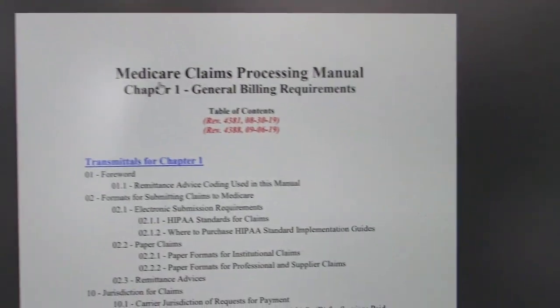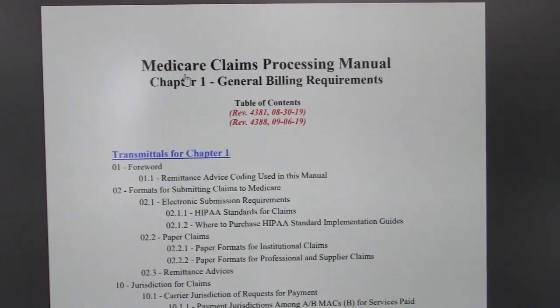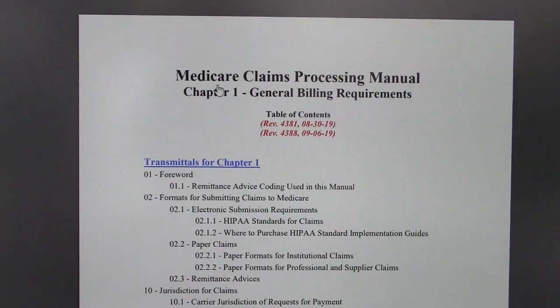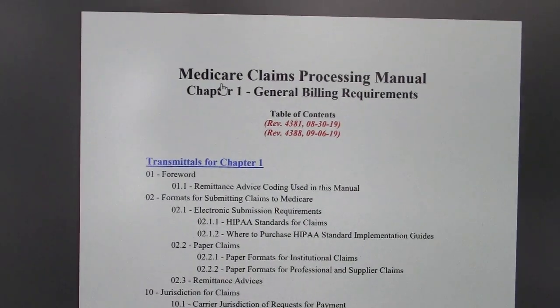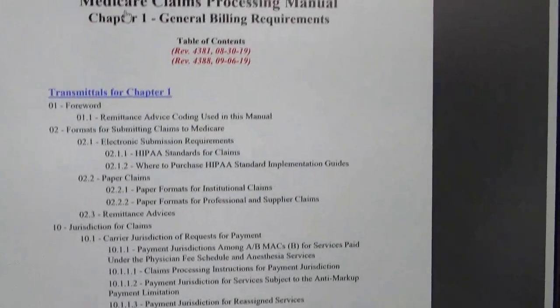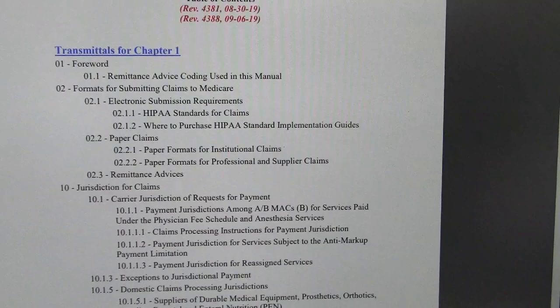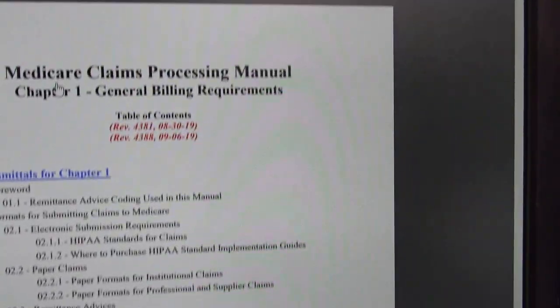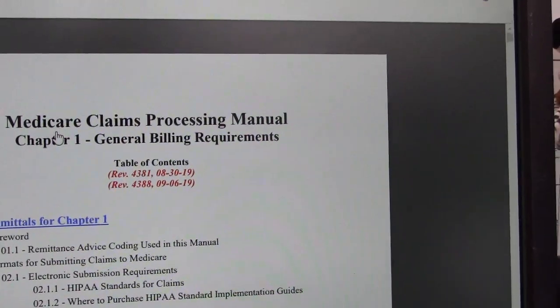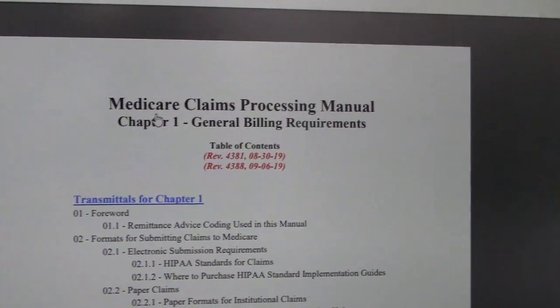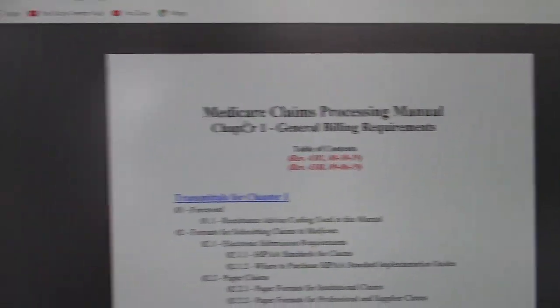These chapters can be downloaded and saved on your computer or other electronic devices as PDF files. They give you your rules and your guides for whichever area you need — Chapter 1 covers general billing requirements. So spend some time playing on the CMS website.